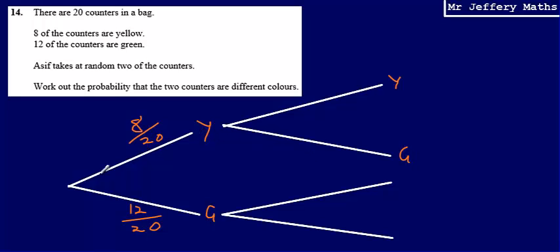So if he chose a yellow counter first, that means that on his second pick he's only going to have 7 yellow counters left in the bag, and that means that there are 7 counters out of 19 in total, because he's already taken one out. Here, well there are still 12 green counters in the bag, out of the 19 that are left in there.